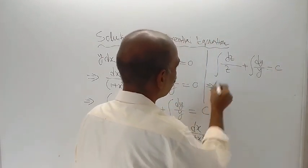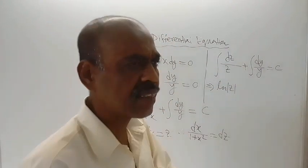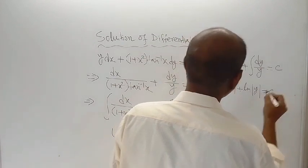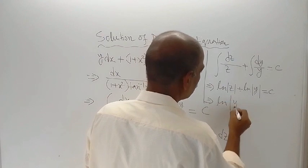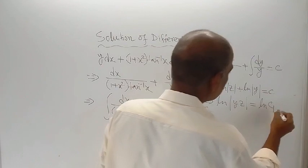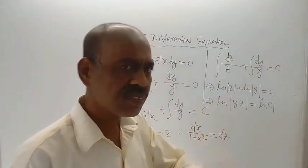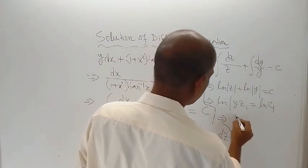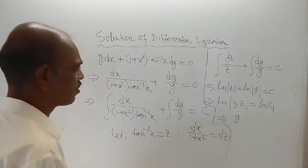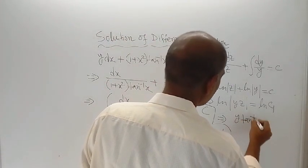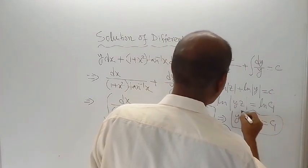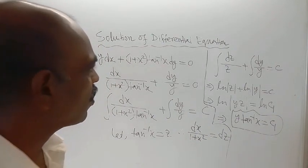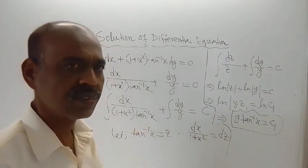The integration of dz by z is log of mod z to the base e — I have written LN, that means log to the base e. So LN mod z plus LN mod y equals c, which equals log of y·z, and that equals log of c₁. So c has been replaced by log of c₁, where c₁ is a new constant. From here, y·z — and z equals tan inverse x — so y·tan inverse x equals c₁. This is the solution of the given problem.